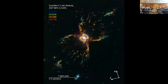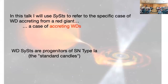In this talk, whenever I say symbiotic star, I will be talking about those where the accretion object is a white dwarf — the low mass star case. Why are these important? These white dwarfs are the progenitors of Type Ia supernovae when they reach the Chandrasekhar limit. These objects are useful in order to use them as standard candles whenever they explode.